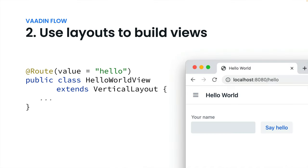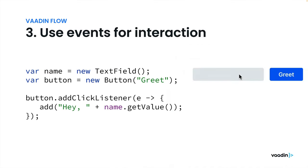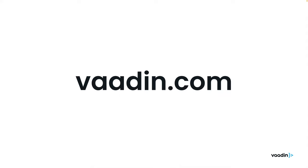You can add a route annotation on a component to be able to navigate to it. And you can add listeners to components to be able to add interactivity. Learn more and get started on Votten.com.